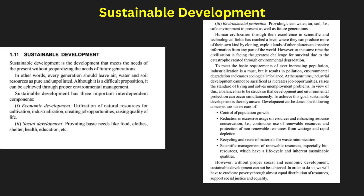Sustainable agriculture promotes organic farming and water conservation. Urban planning incorporates green spaces, efficient transport, and eco-friendly infrastructure. International agreements like the Paris Agreement guide global sustainability efforts. Industries adopt cleaner production methods to reduce emissions and waste. Governments implement policies encouraging sustainability through incentives and regulations. Public awareness and education foster a culture of conservation, guaranteeing long-term environmental health.